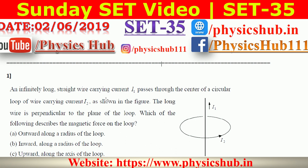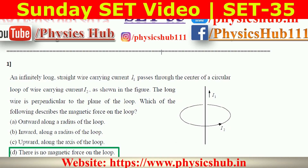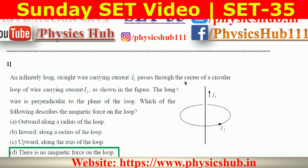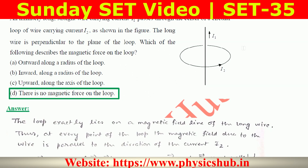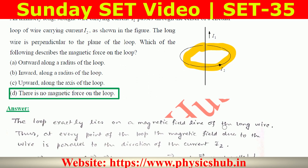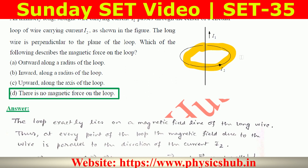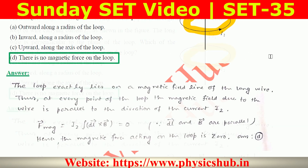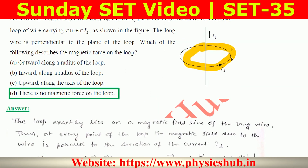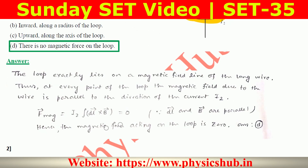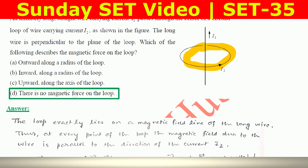Question 1: An infinitely long straight wire carrying current i1 passes through the center of a circular loop of wire carrying current i2, as shown in the figure. The long wire is perpendicular to the loop. Which of the following describes the magnetic force on the loop? The circular loop lies exactly on the magnetic field of the long wire, so at every point of the loop the magnetic field due to the wire is parallel to the direction of current i2 — it is basically tangential. Therefore, F = i2 ∮ dl × B, and since dl and B are parallel, their cross product is zero. Hence the magnetic force on the loop is zero, so option D is correct.